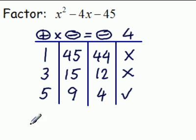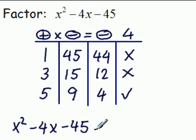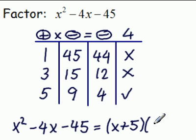So our answer is x squared minus 4x minus 45 equals x plus 5, x minus 9. And we are done.